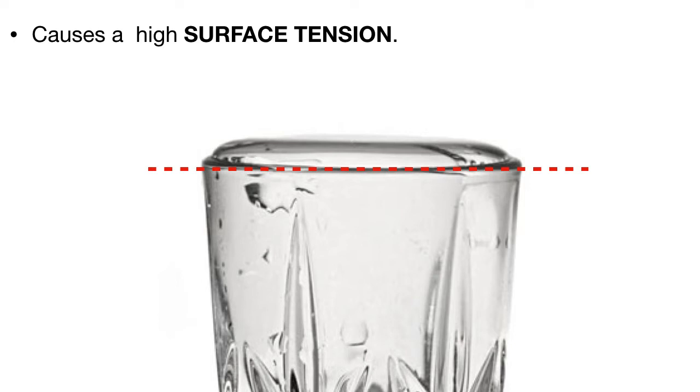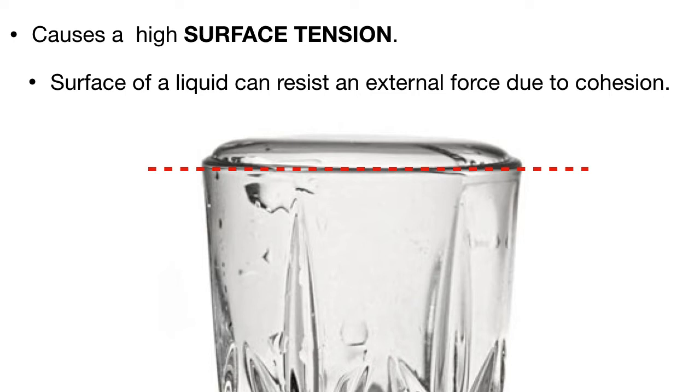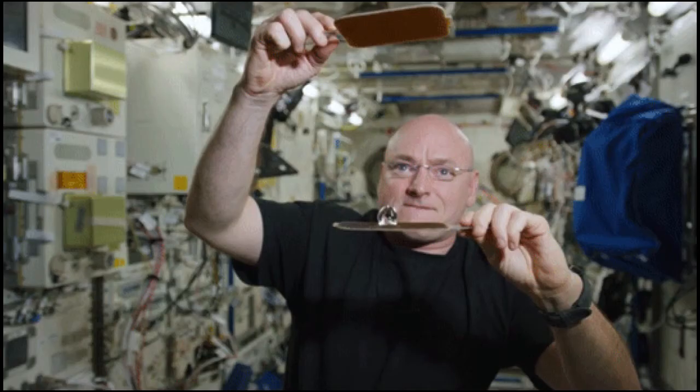Surface tension could be defined as the property of the surface of a liquid that allows it to resist an external force, in this case gravity, due to the cohesive nature of the water molecules. Without gravity, then cohesion and surface tension can actually do some pretty neat things.